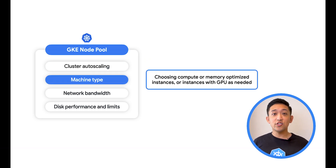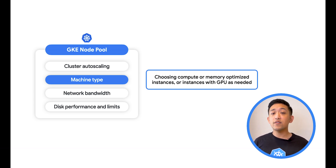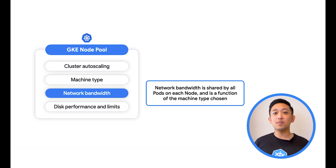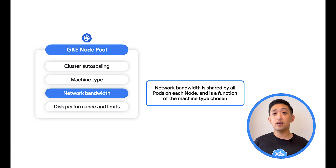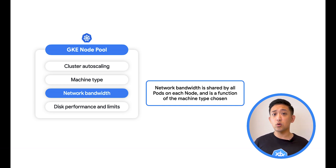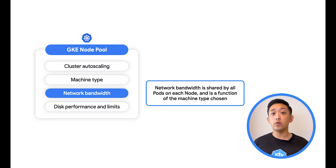Machine types are also critical. In GKE, you have the opportunity to create multiple node pools, potentially from different machine families. Depending on your workloads, you may find better performance from compute or memory-optimized instances, or even T2D instances when optimizing for price performance. It's important to consider traits of the machines at the surface level as well, with network bandwidth being a critical one. All pods on a given node share the same underlying network bandwidth, which is a function of the amount of CPU available to the machine. So it's important to think about how much networking bandwidth each node will get, and if you have networking-intensive workloads, consider isolating those to their own nodes or node pools.